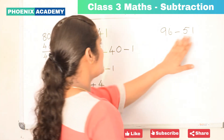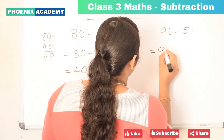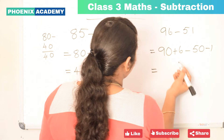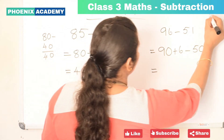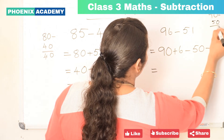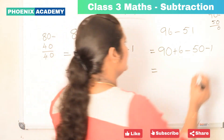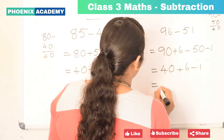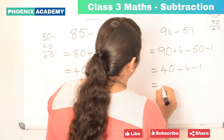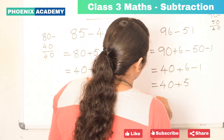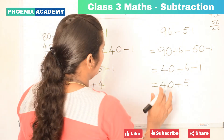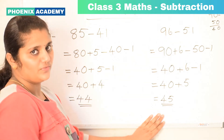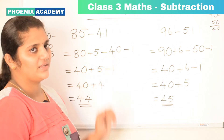Let's do this example: 96 minus 51. That is 90 plus 6 minus 50 minus 1. Let's subtract 50 from 90: 9 minus 5 is 4, so that's 40. Then 40 plus 6 minus 1: subtract 1 from 6 is 5. Then add 40 plus 5 is 45. So the difference of 96 and 51 is 45. This is how we do subtraction by breaking both numbers.